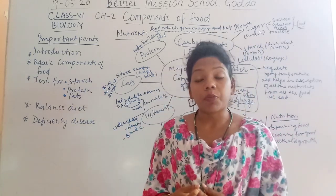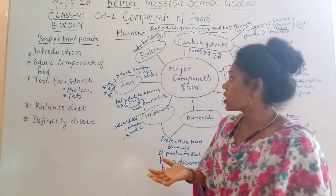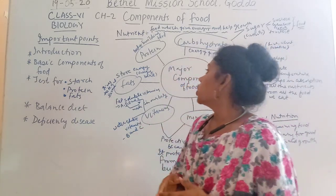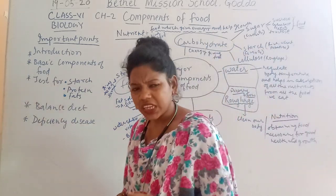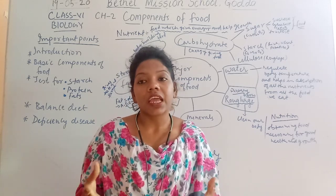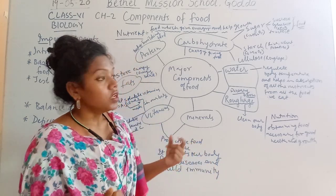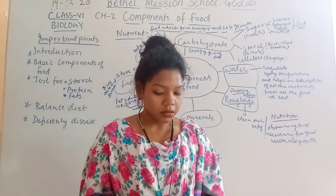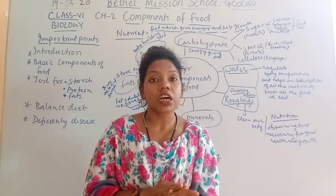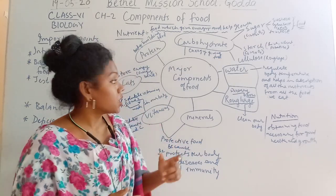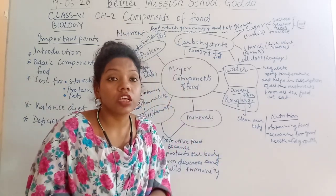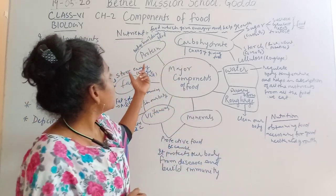For non-vegetarians, you can eat fish, egg, and chicken. These are the sources of protein. Protein can be obtained from both plants and animals. It is called body-building food because it repairs the worn-out cells. Wherever inside the body there is damage — for example, when you get hurt on your hands, after some days it is covered by smooth muscle. This is because protein repairs the broken or torn parts of our body, whether inside or on the surface.